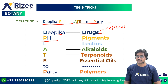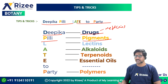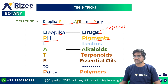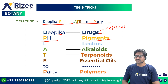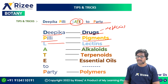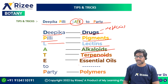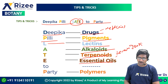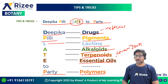P stands for Pigments — anthocyanins, carotenoids, xanthophylls — these are types of pigments. L stands for Lectins. A stands for Alkaloids. T stands for Terpenoids. E stands for Essential oils, like lemongrass oil.